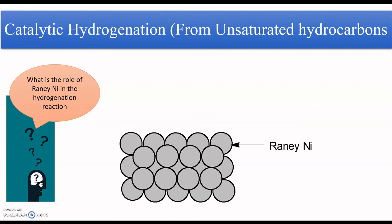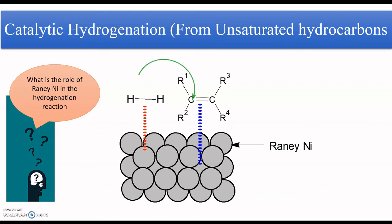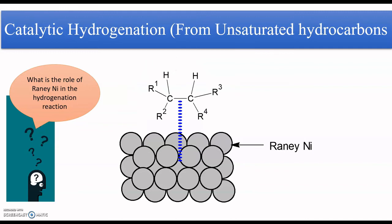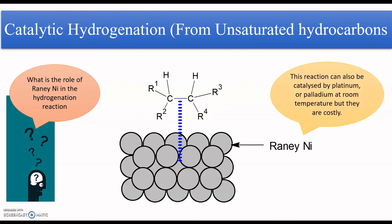The role of Raney nickel in this hydrogenation reaction is to provide a common surface or platform for the reactants. On this catalytic surface, the hydrogen and the alkene get adsorbed, they react with each other, and the product is formed. Once the saturated product is formed, it leaves the catalyst surface.